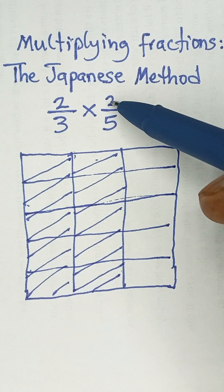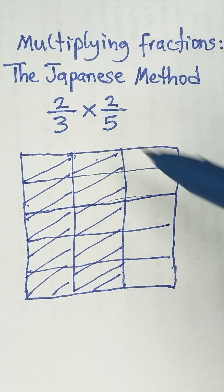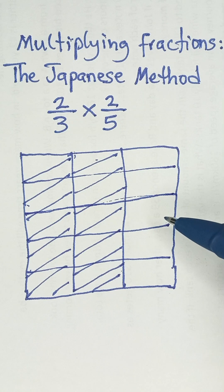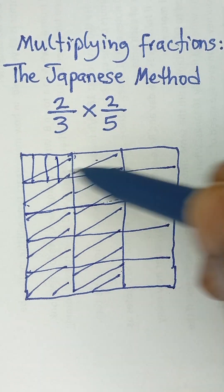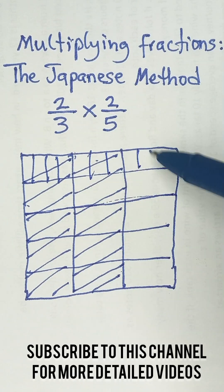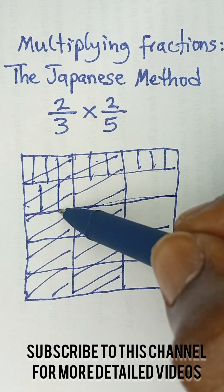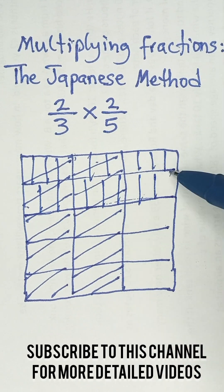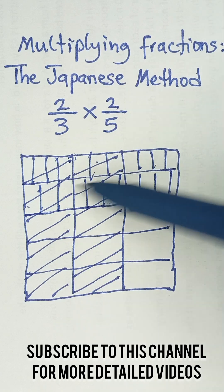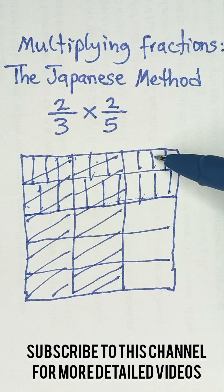Now because of the 2 here, out of these five parts, we are going to select two of them. Let me use vertical lines to select two of them. Out of the five parts I've selected two: this part is one and this part is two.